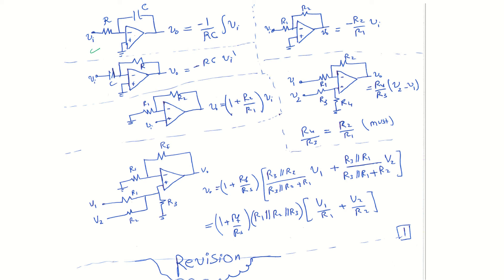The first circuit represents the integrator, where the capacitor is in the feedback and R is in the input path. The second circuit is a differentiator. The third circuit has a negative gain that could be less than 1 or more than 1. The fourth circuit always has a positive gain greater than 1. So if the gain is positive and more than 1, we prefer this circuit; if the gain is more or less than 1, we can use the second circuit.